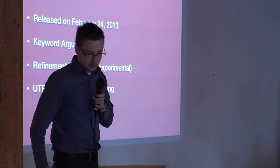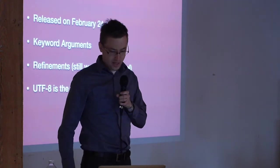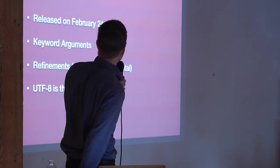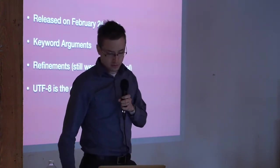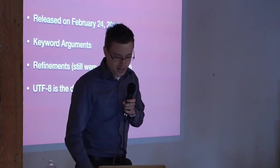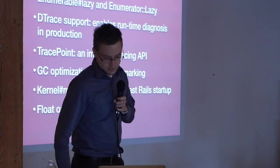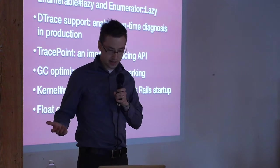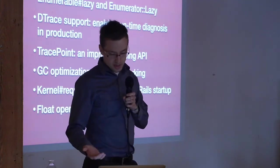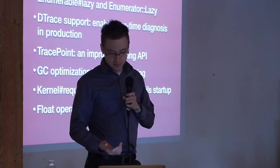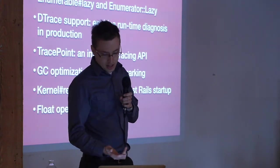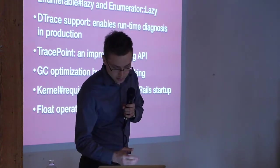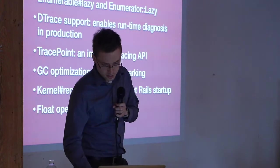So, Ruby 2.0.0, it was released just after the last Red Snake. You now get keyword arguments, refinements, which are still experimental in this version, but in 2.1, they are no longer experimental. And UTF-8 is the default encoding. Some other changes. You have lazy methods for performing operations on potentially infinite streams. There's some improved debugging tools, as well as garbage collection optimization, and I'll talk more about that for version 2.1. Method dispatch is also, virtual machine method dispatch has been improved.